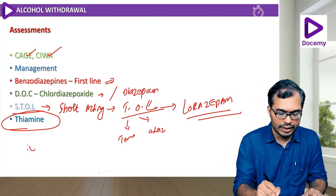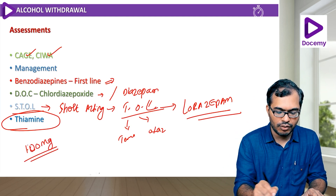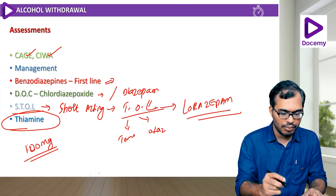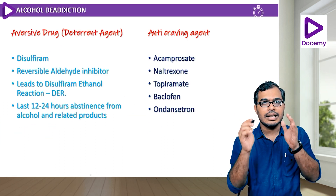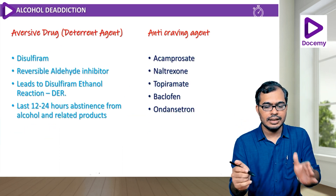Very important: in all withdrawal-related treatment, thiamine is the mainstay. Thiamine should be given — 100 milligrams of thiamine should be given for simple withdrawal.